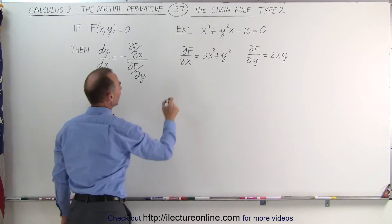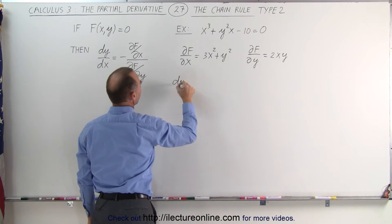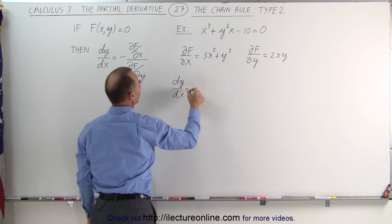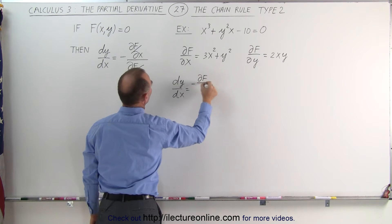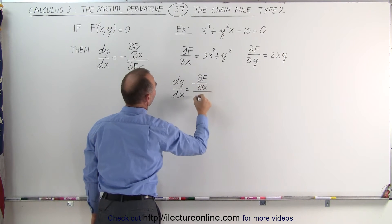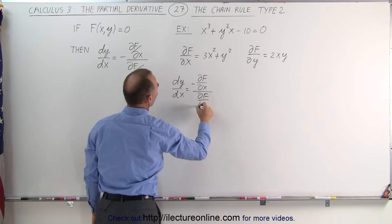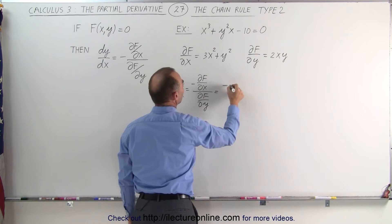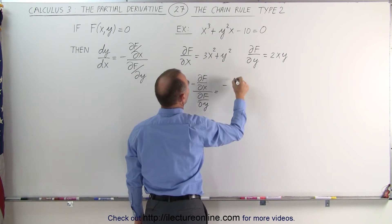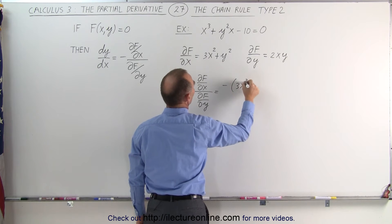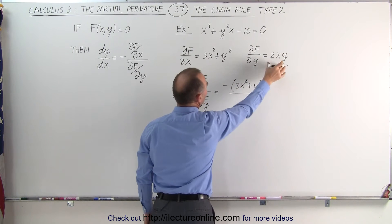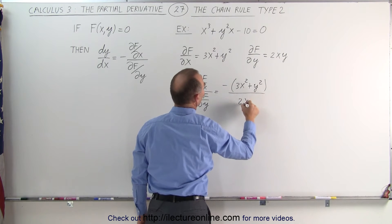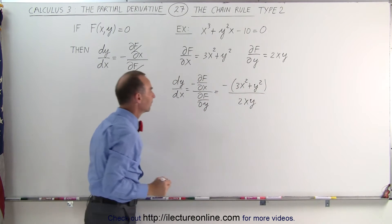Now we can say that dy/dx, which is equal to the negative of the partial of f with respect to x divided by the partial of the function with respect to y, is equal to the negative of 3x squared plus y squared, divided by 2x times y.